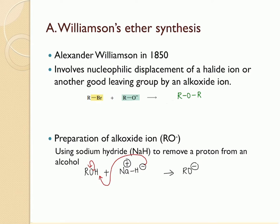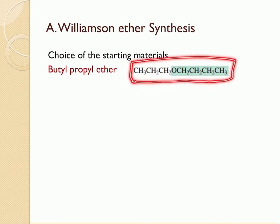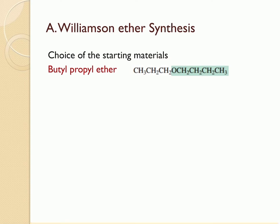Once the alkoxide ion is formed, it reacts with the alkyl halide, forming the ether. For Williamson's ether synthesis, the choice of starting materials is very important. For example, to synthesize butylpropyl ether, you can start with either propyl bromide or butyl bromide and react it with the corresponding alkoxide ions.